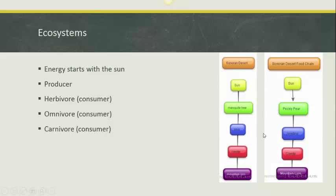Next we have omnivore. Our omnivore for both is the coyote. The coyote eats the dove and the coyote also eats the javelina. The coyote since it's an omnivore also eats the mesquite tree and for the second chain also eats the prickly pear.